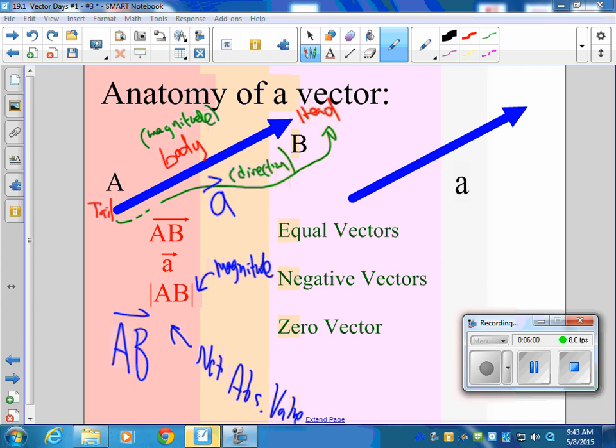Equal vectors, in order to be equal vectors, they have to both have the same what? Yeah, they have to have the same direction. Isn't one direction a group? Yeah, okay. I'm kidding. And then the same magnitude. Apparently a jokey group.